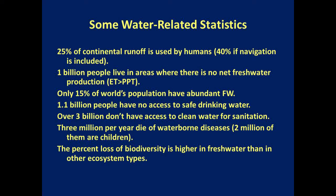Some of these statistics illustrate what's going on. We're using over a quarter of the continental runoff, and what we're not using generally flows to areas where there are no people, like the high Arctic. A billion people don't have freshwater — they're living in semi-arid and arid areas. Over three billion people either have water that's not safe to drink or not safe for sanitation. And there are all sorts of waterborne diseases that kill many people every year, a lot of them very young. The highest losses in global biodiversity are in freshwater systems.